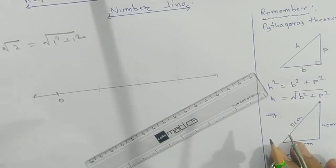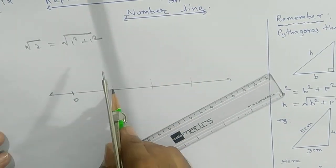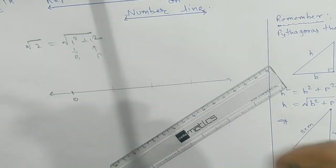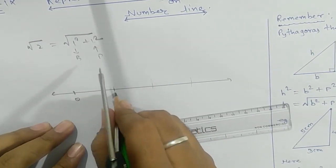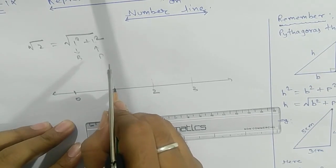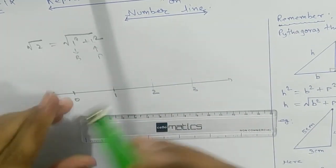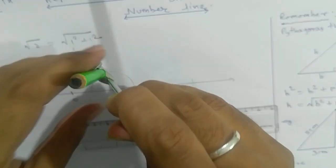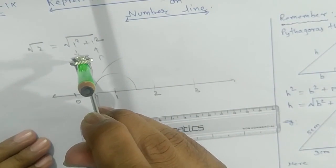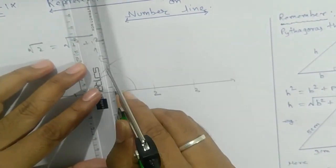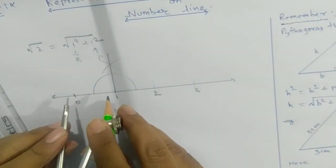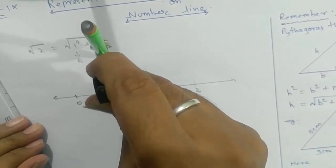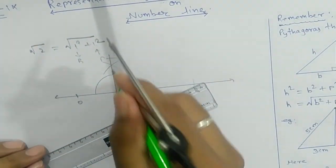So let's start. We need base 1 unit — this is your base and this is your perpendicular. We have marked 1, 2, 3 on the number line. On one unit, we are going to take a perpendicular line. With the help of a compass, draw a 90-degree angle, then extend it. Take the length of one unit and mark it on the perpendicular.